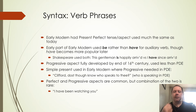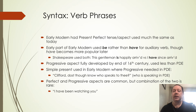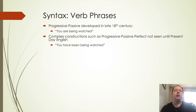The perfect and the progressive are common in Early Modern English, but the combination of the two together is still relatively rare. Something like 'I have been watching you' is not a construction we would really have seen in Early Modern English yet, but it's a perfectly sensible one in present-day English. The progressive passive is starting to be developed during the late 18th century — 'you are being watched' starts to develop — but we don't really see as many of these super complex constructions until present-day English.